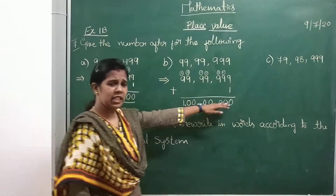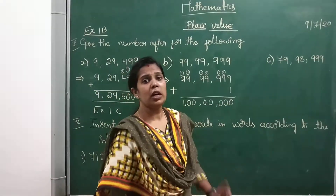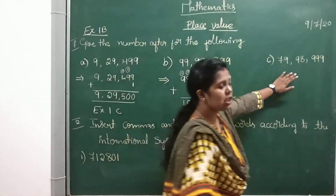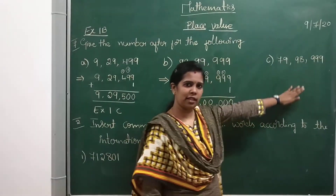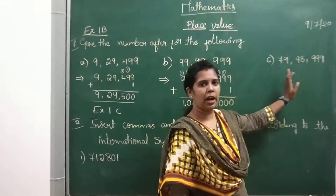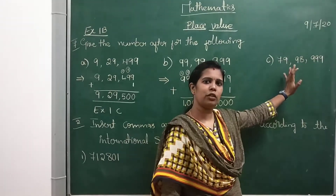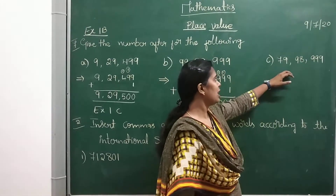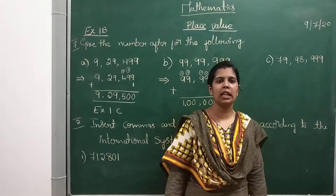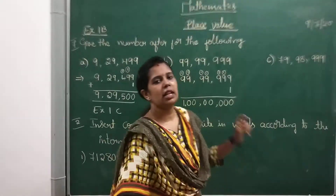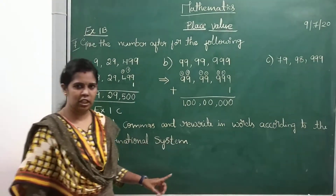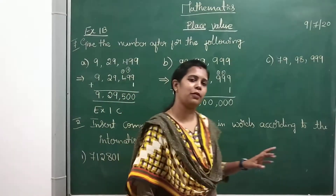We are inserting commas according to the international system of numeration. This next sum I will give you as homework — try to solve it. Here also you have to add 1 to the given number to get the after number. The number is 79,98,999. Solve this and complete the classwork regularly. If you have a doubt, please text me and clarify your doubts.